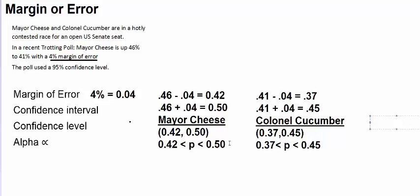If that's the case, Colonel Cucumber could actually be in the lead. So you would consider this a statistical tie because their confidence intervals overlap. The poll would suggest that Mayor Cheese has the lead, but when you take into account the margin of error, it's still very reasonable for the opinion of the population for Colonel Cucumber to be in the lead, or for this race to be tied. So you would think of this as being a statistical tie.